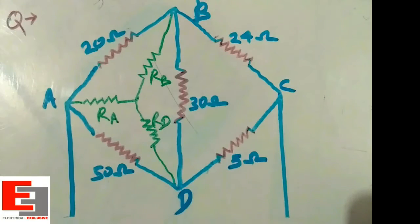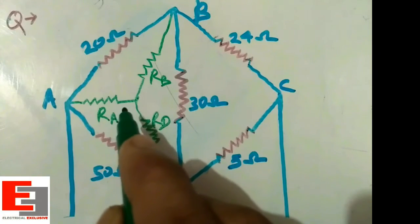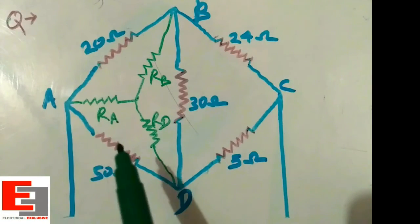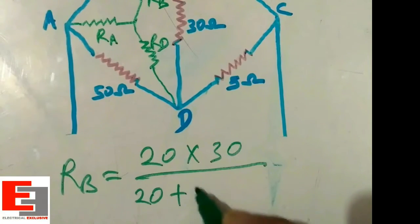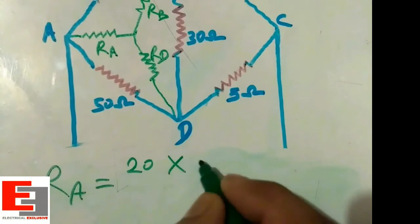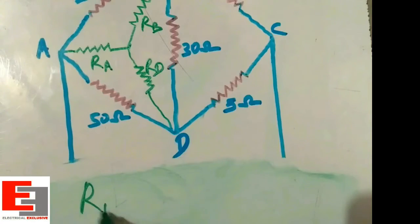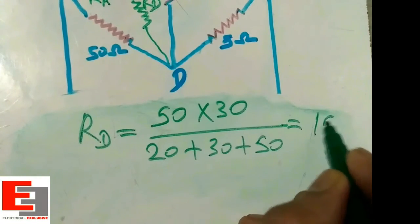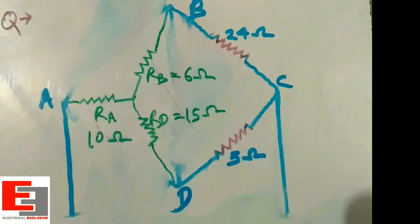The same procedure to find RA: the two adjacent arms are 20 ohm and 50 ohm, so RA = 20 × 50 divided by the sum of all three resistances of the delta. This gives RB = 6 ohm, RA = 10 ohm, and RD = 15 ohm. Now we can replace the delta and solve the circuit using series and parallel circuit rules.